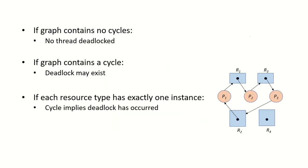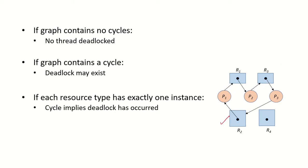Given a resource allocation graph, we can check whether processes are deadlocked by looking for cycles. In this graph, starting from P1: P2 is requesting R3, R3 is allocated to P3, P3 is requesting R2, and R2 is allocated to P1 — so there is a cycle involving P1, P2, P3 and resources R1, R2, R3. If a cycle exists there is a possibility of deadlock; if there is no cycle, then no process or thread is deadlocked.